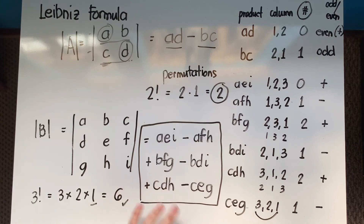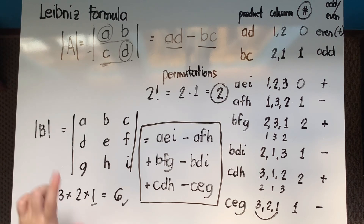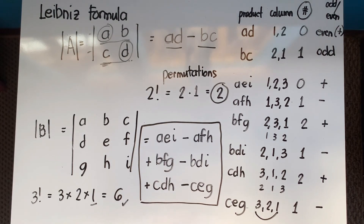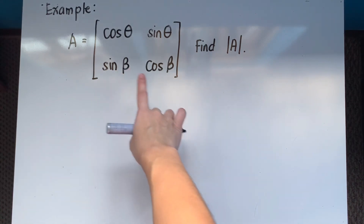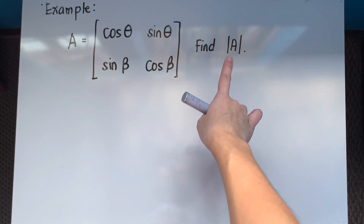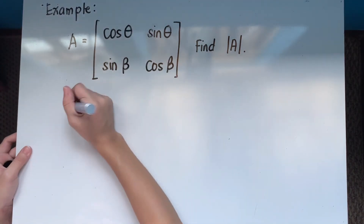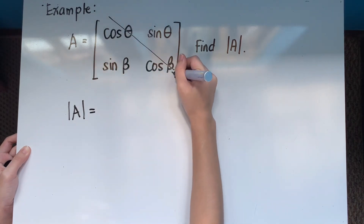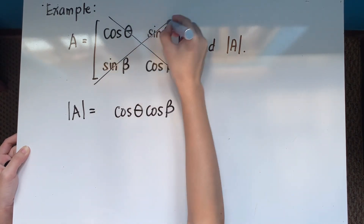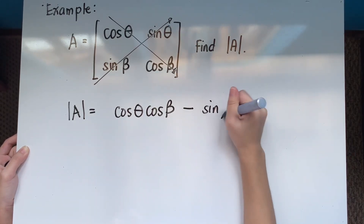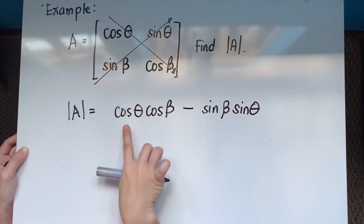As mentioned, we most likely use the Leibniz formula on 2x2 matrices. Here is an example: we have a 2x2 matrix containing trigonometric functions and we are asked to find the determinant of A. Using the Leibniz formula, we take the product of the main diagonal minus the product of the other diagonal: cosine theta times cosine beta minus sine beta times sine theta.